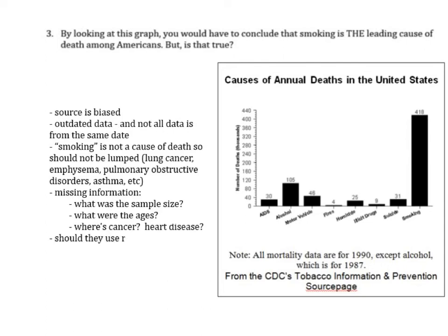The last thing to consider is whether they should be using relative frequencies. These are absolute frequencies — just the number of deaths in thousands. Is it possible that more people died from a smoking-related illness simply because more people smoke than, say, do drugs? If these were changed into relative frequencies — out of all the people that smoke, what percent of them died — they might tell a very different picture.